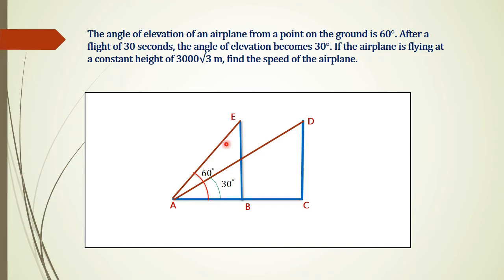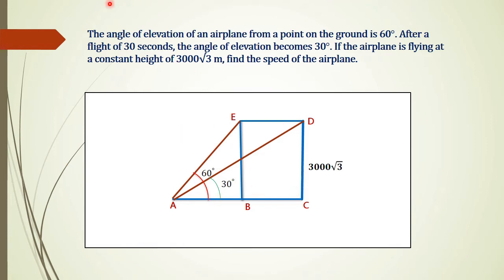It is also given that the height of the plane from the ground is 3000 root 3 meters. Therefore, DC equals 3000 root 3 meters. We can also define DE equal to 3000 root 3 meters. We have to find the speed of the plane.